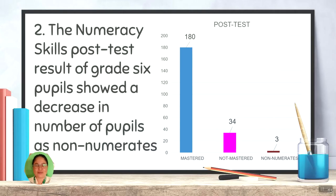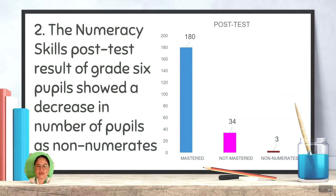As a result of collaborative work by the research team, the intervention program was used to enhance the skills in basic multiplication facts among the 56 participants. The numeracy skills post-test result showed a decrease in the number of non-numerate pupils from 56, which decreased to 3 pupils — a 95% decrease.